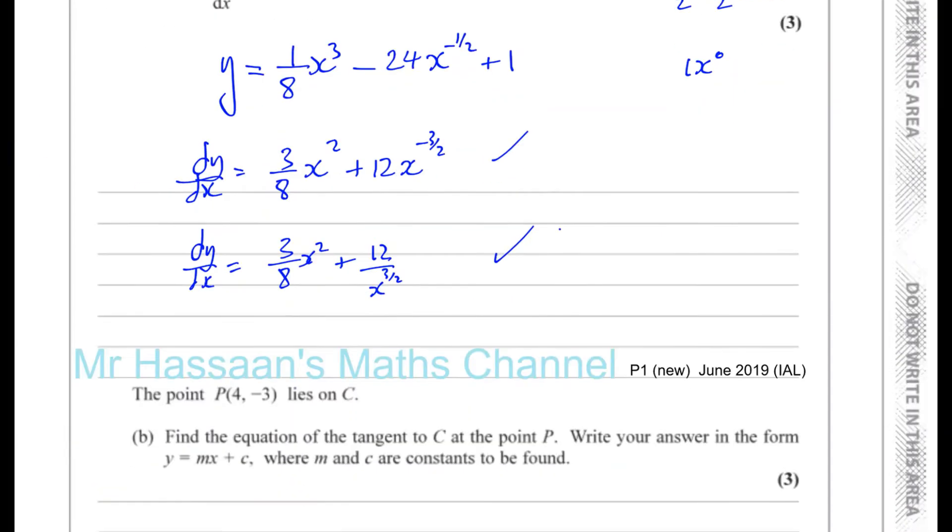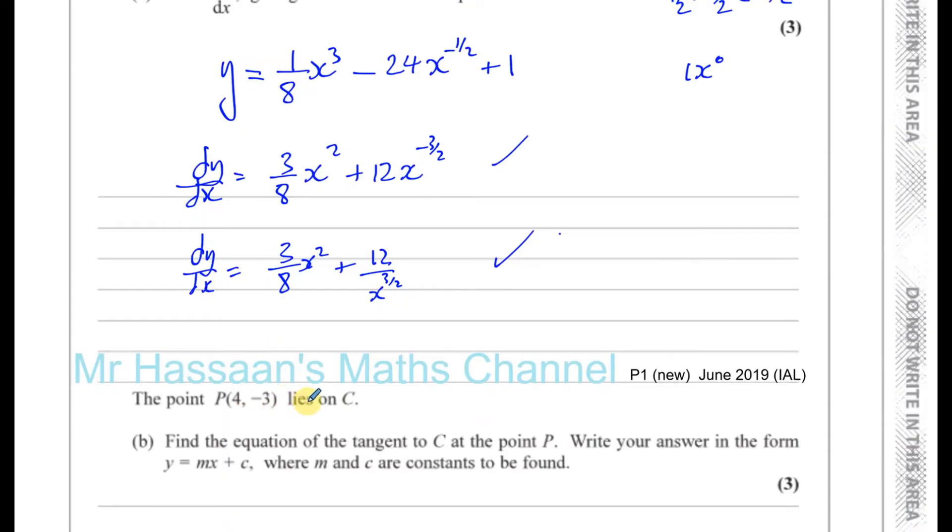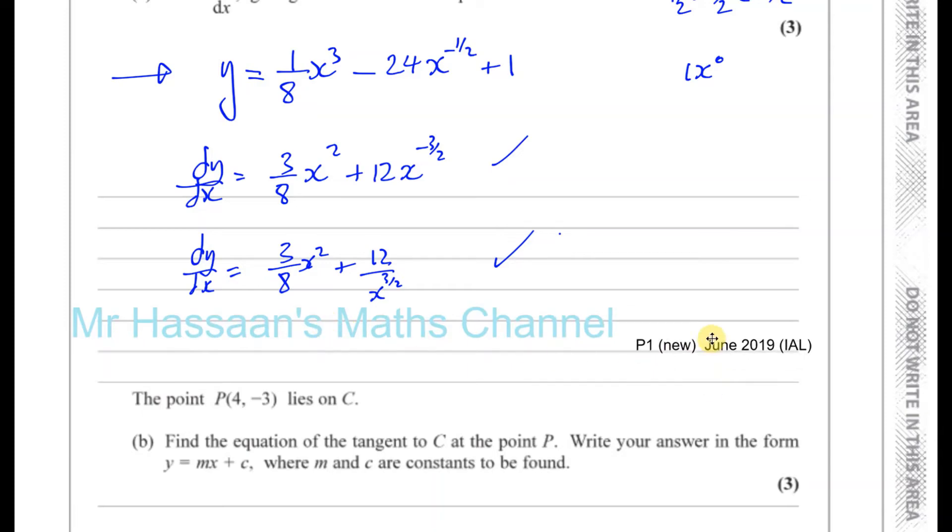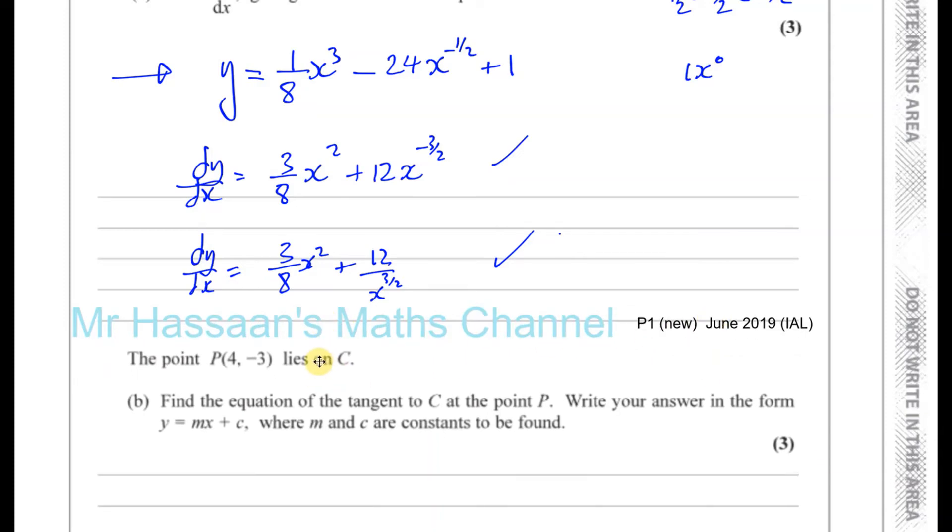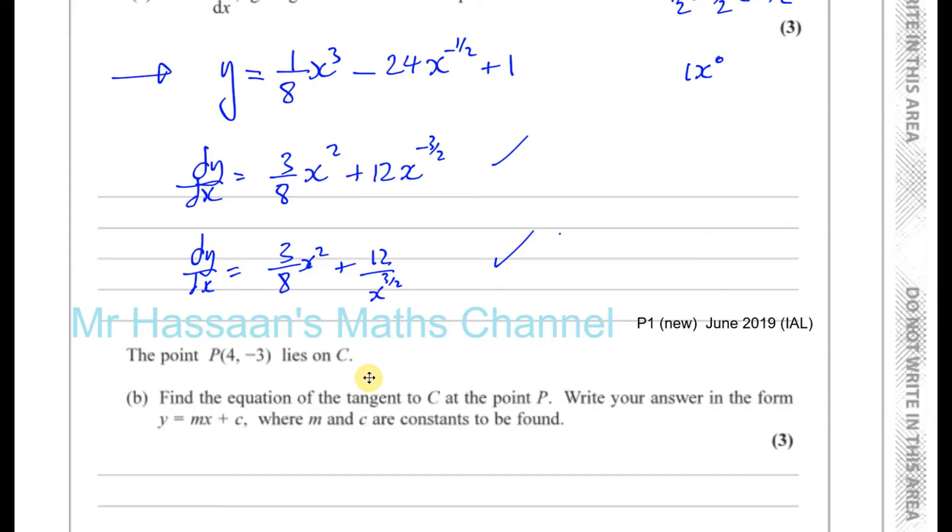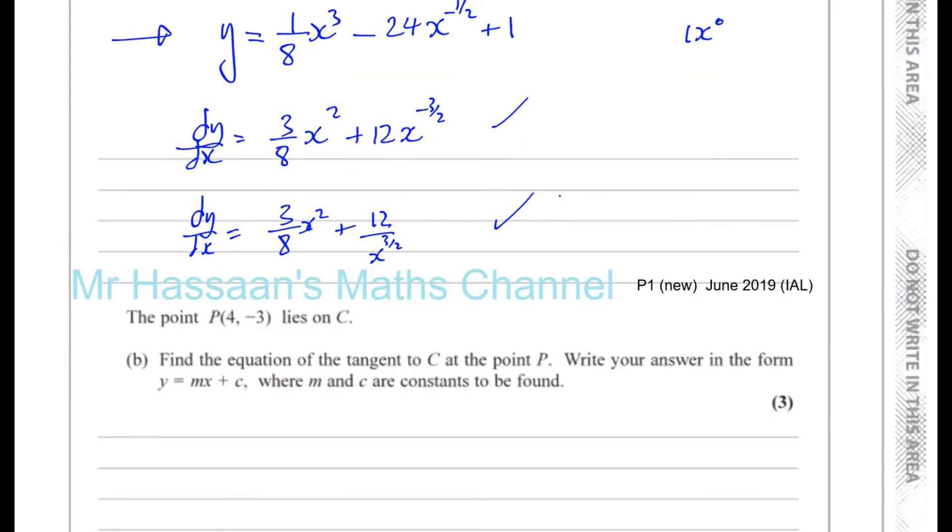Now part B says the point P(4,-3) lies on C, which is the curve defined by this equation here. Find the equation of the tangent to C at the point P. So the equation of the tangent to the curve C at the point P. And write your answer in the form Y equals Mx plus C.